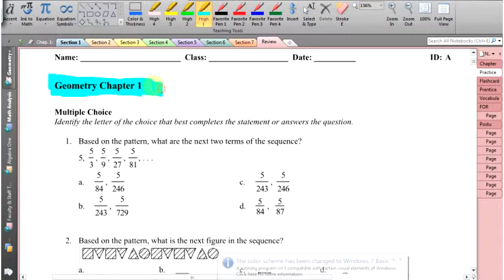Well, here we go. This is the practice test for geometry chapter 1 and let's get started with problem number 1. So I see a pattern in here. It says based upon this pattern, what are the next two terms of the sequence?